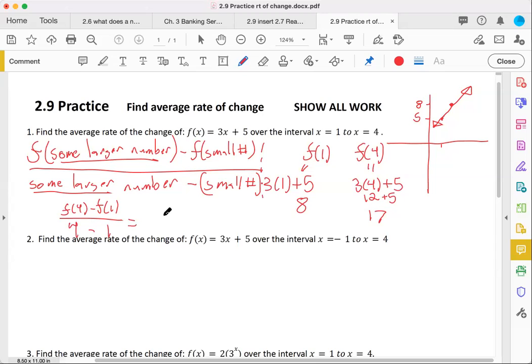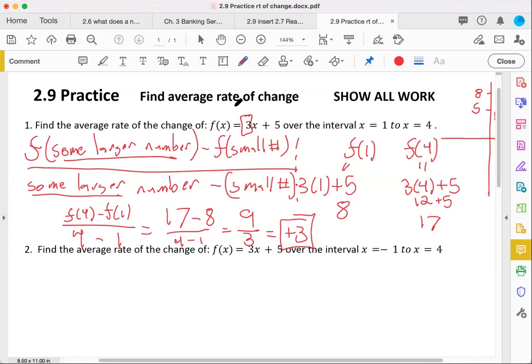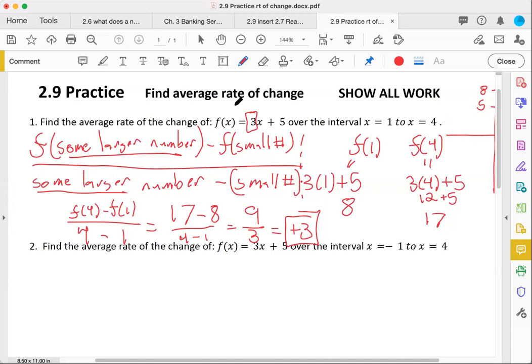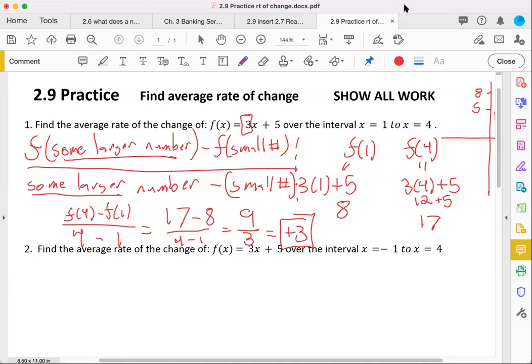So f of 4 was 17, deducting f of 1, which was 8, taking 4 minus 1. So the difference in the x terms. 17 minus 8 is just 9. 4 minus 1 is just 3. So our rate of change here is 3. Imagine that. Front of x. Kind of makes sense, doesn't it? So although this seems consistent with a linear or an arithmetic sequence, we'll see what this is like with a geometric or exponential sequence in a second.